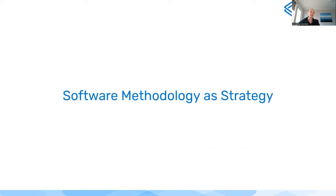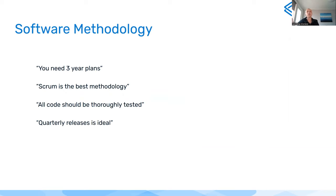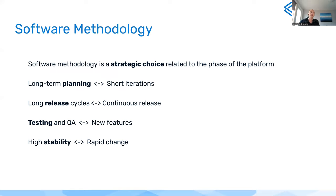Switching gears to software methodology. When I say software methodology I mean things like what type of development process do we have, what type of releasing and planning do we have, and how do we really think about how we build software. Many people come and tell you something is the best — that you need three-year plans, Scrum is the only methodology, all code must be thoroughly tested, quarterly releases are best. These are very dogmatic opinions.